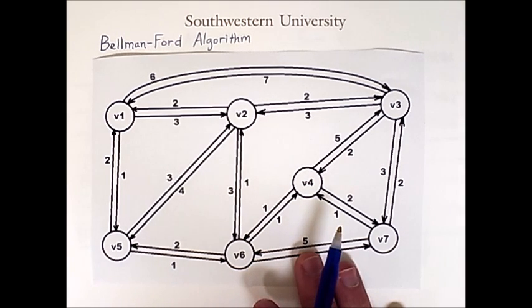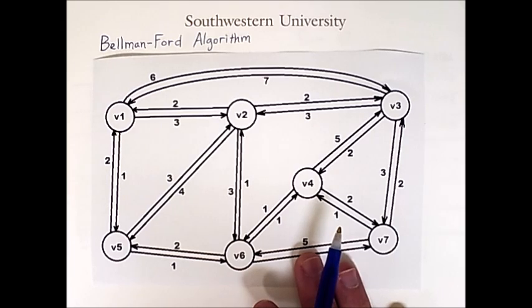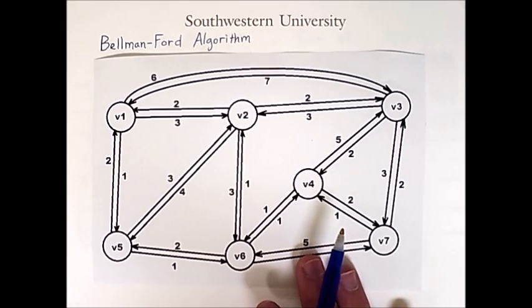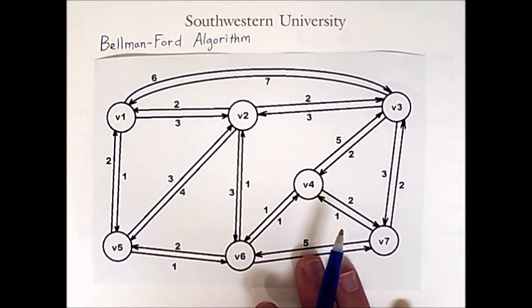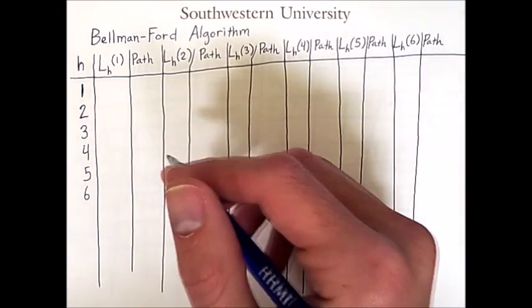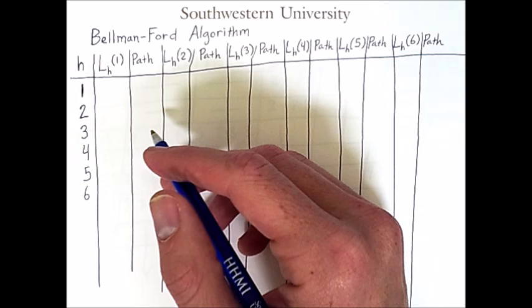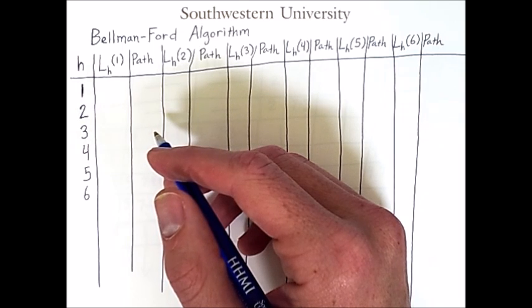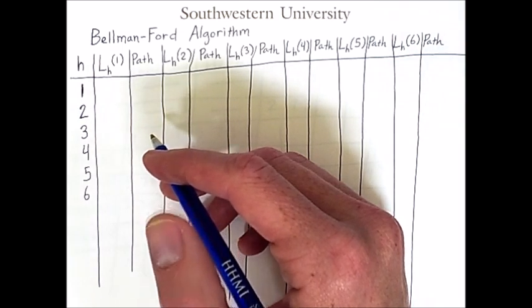To do the Bellman-Ford approach to calculating the shortest paths, we will once again use a table, but with different entries. The table will look like this. This table has some similarities with the table we used in the previous video to calculate shortest paths using Dijkstra's algorithm, but there are some significant differences.